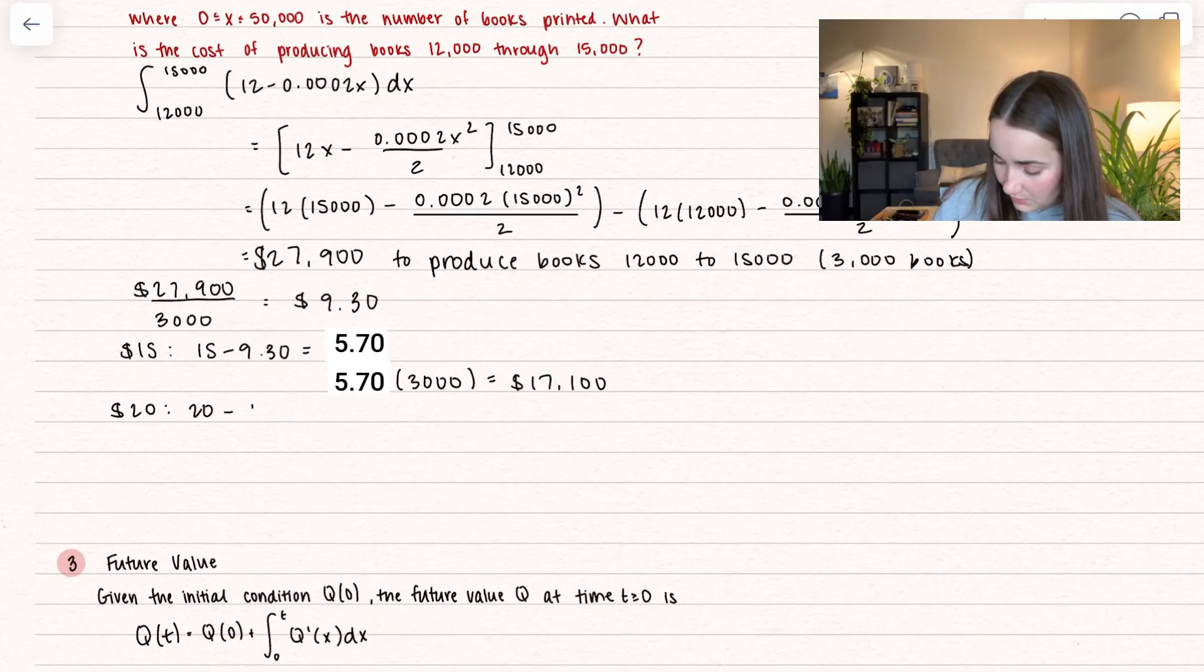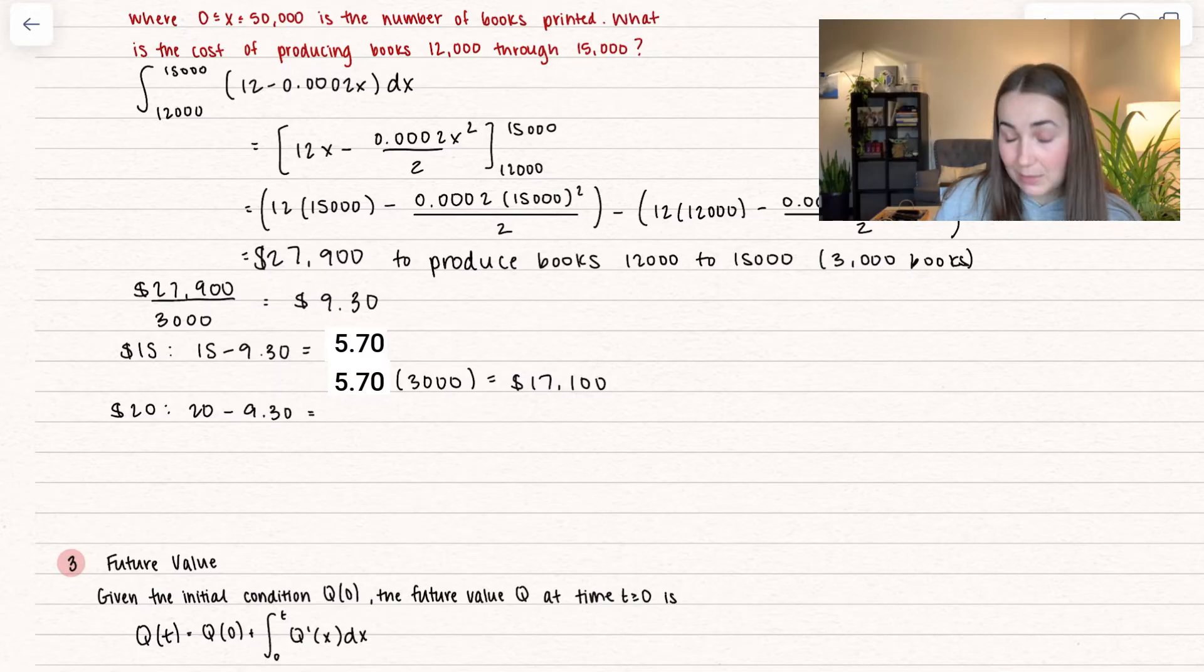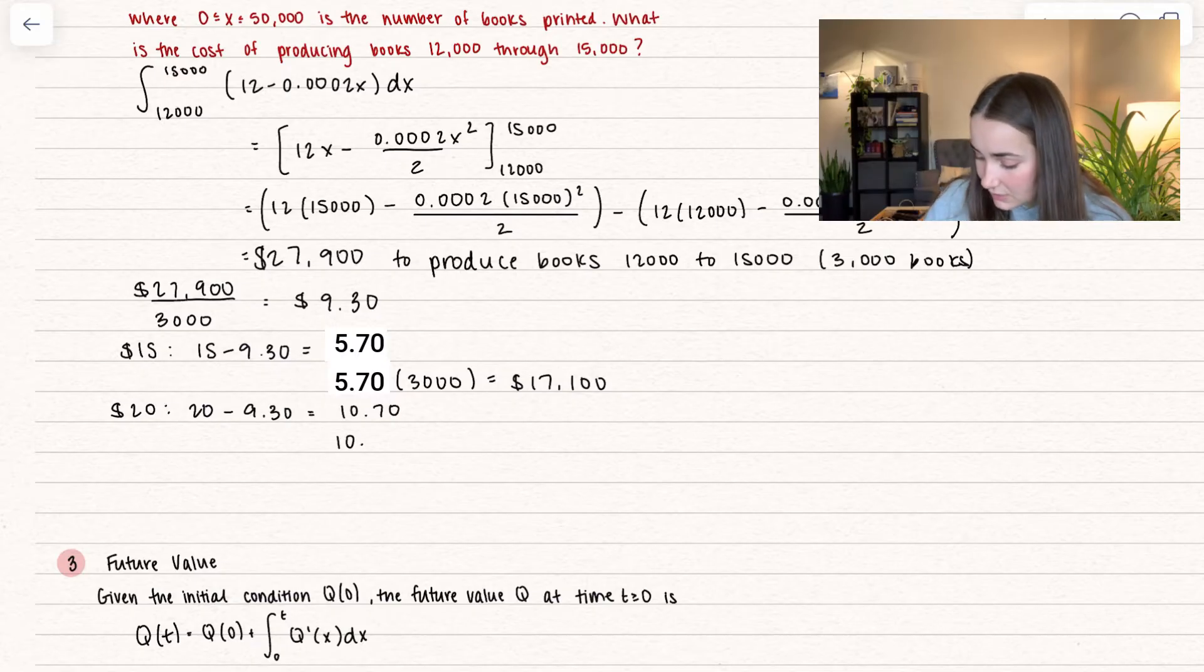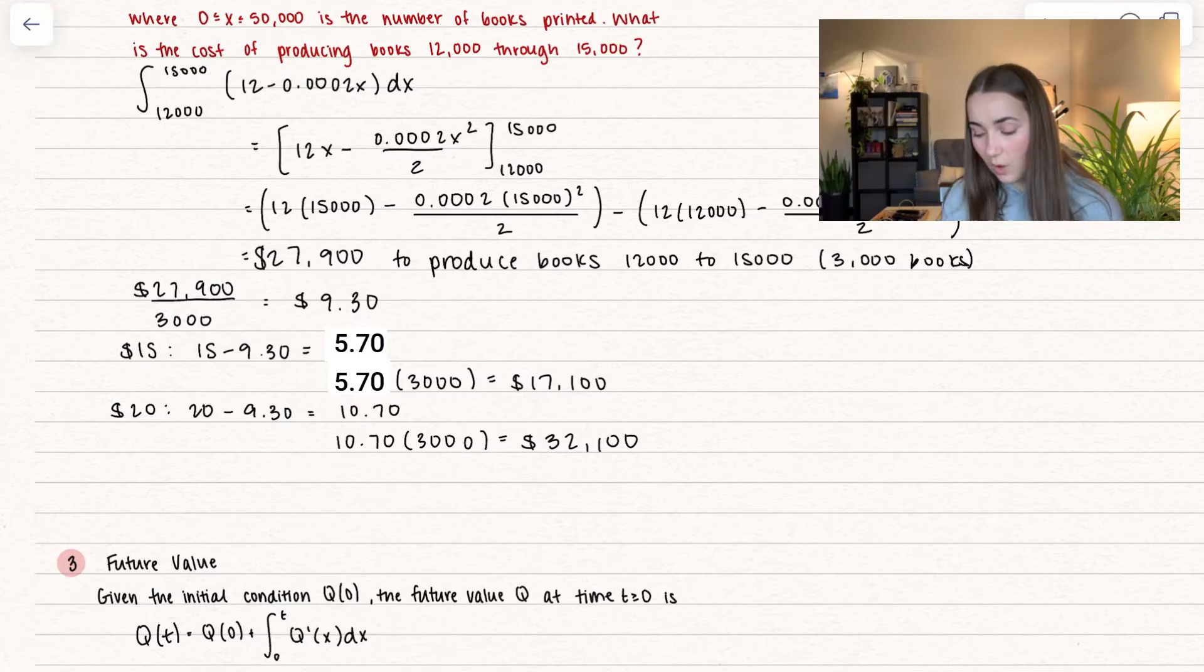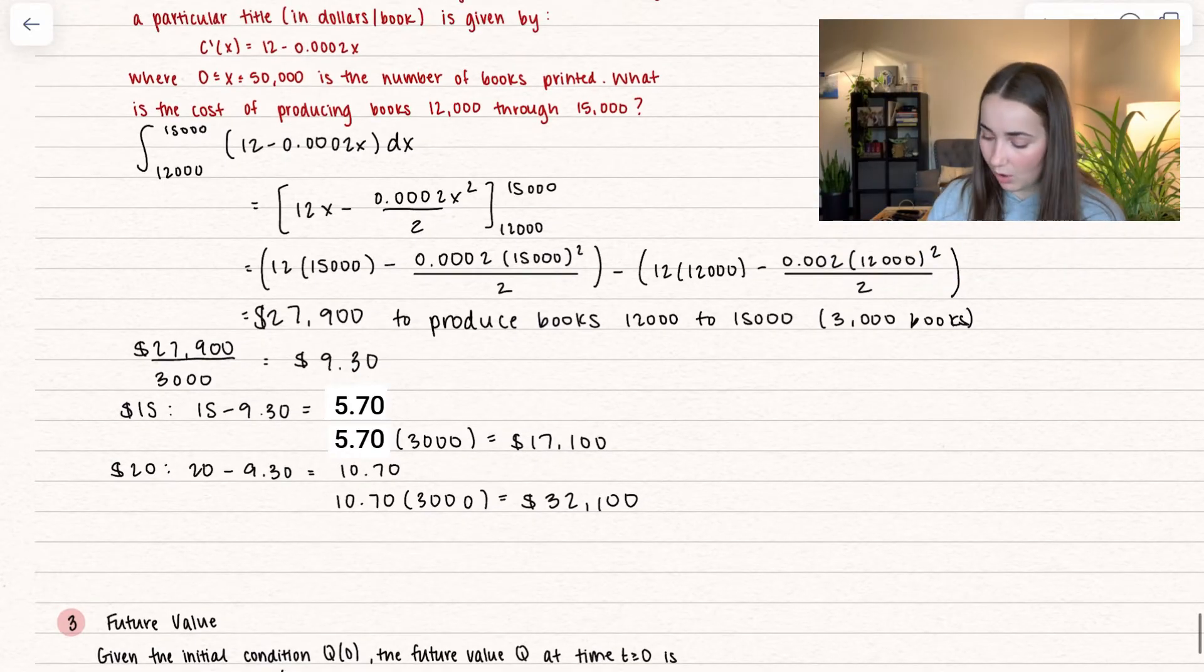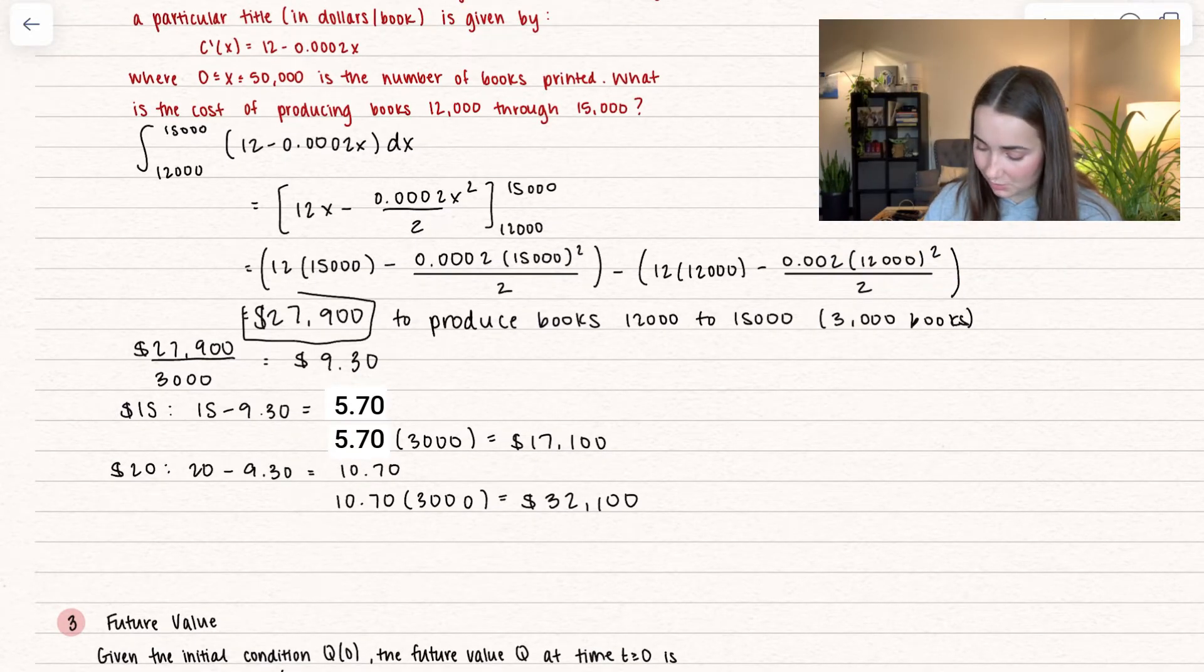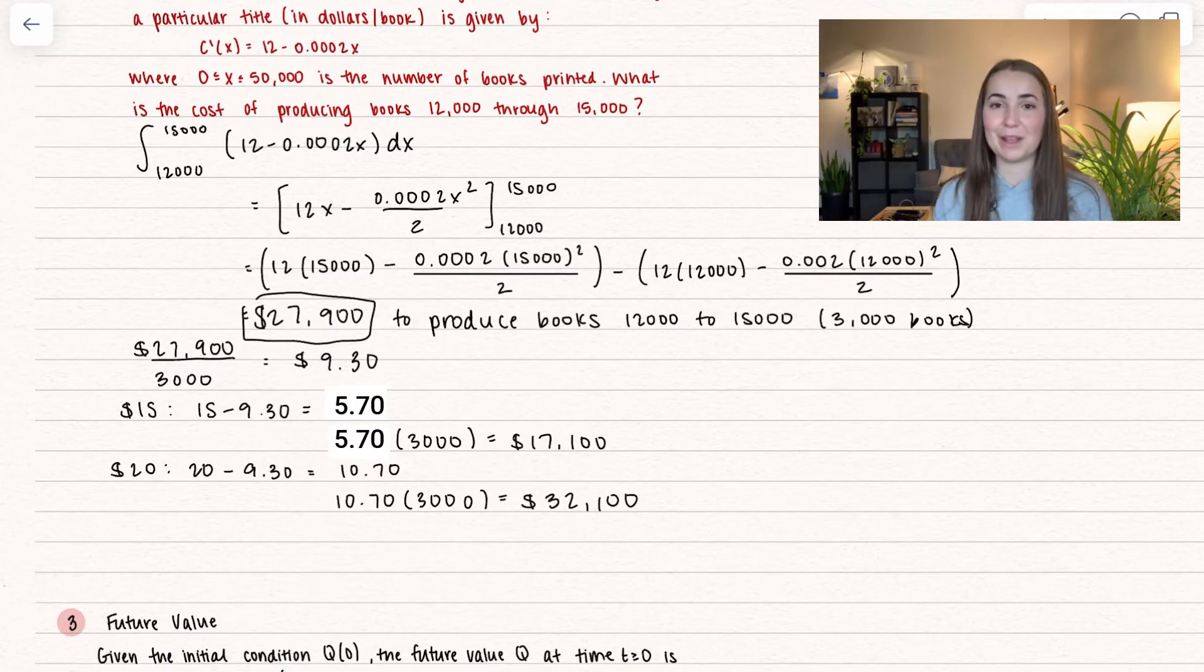Here we take twenty dollars and subtract off the cost of production. We end up getting $10.70. Let's multiply that by three thousand books. We end up with a profit of $32,100. I just thought that was interesting. That wasn't at all part of the problem. This was the solution to the problem, but I just wanted to play with that.